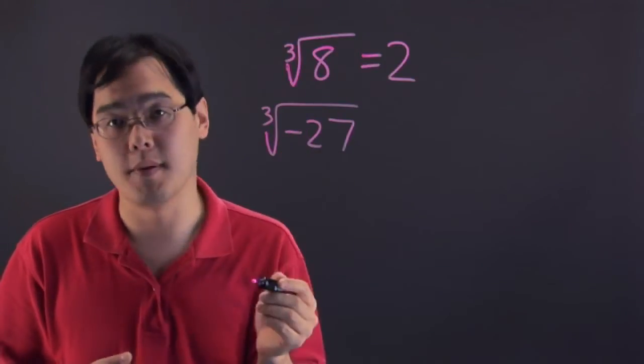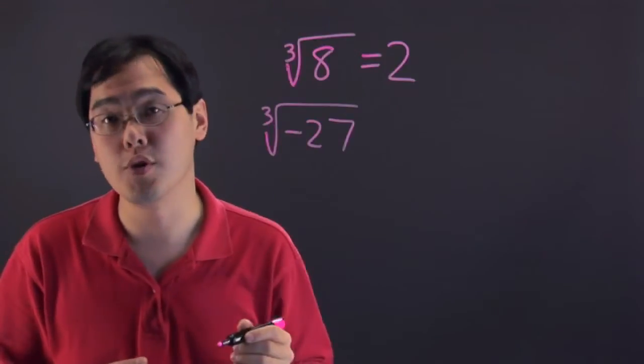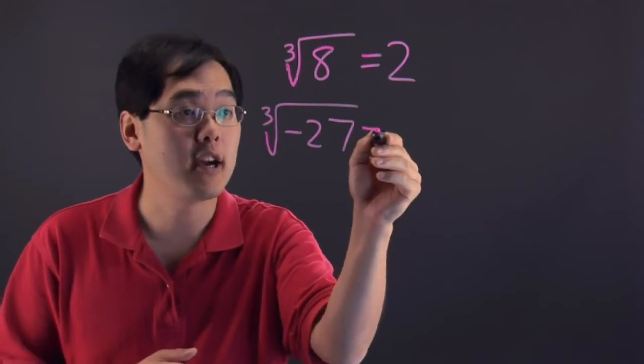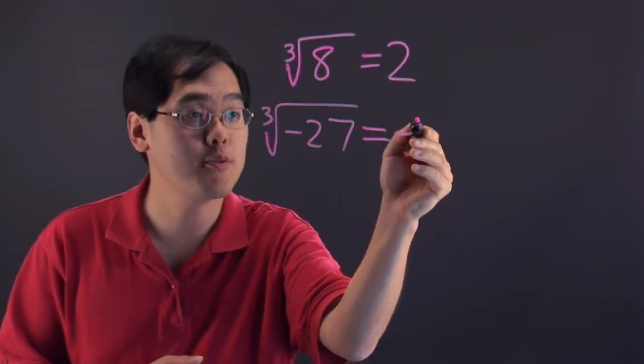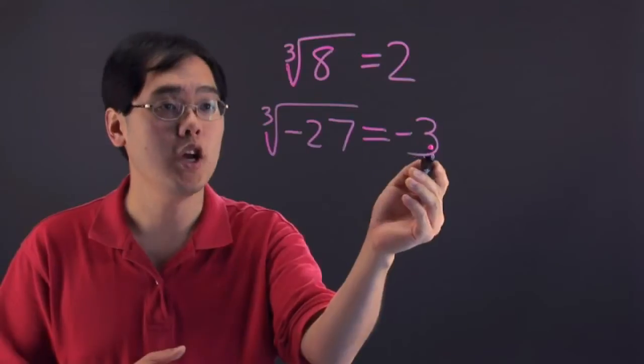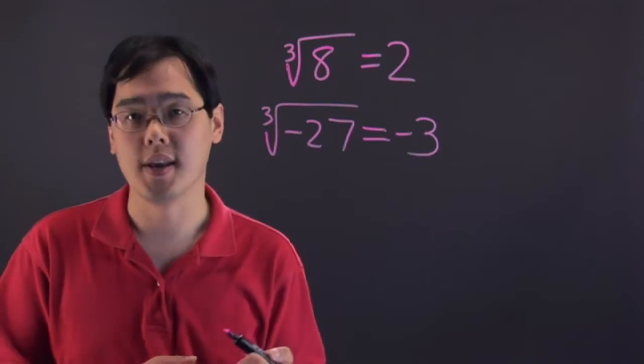Now, because it's a negative number in here and we're talking about cube rooting you may think it's going to be a negative number and you would be right. As a matter of fact, the only number that fits that description is negative 3 because negative 3 raised to the 3rd is going to give you negative 27.